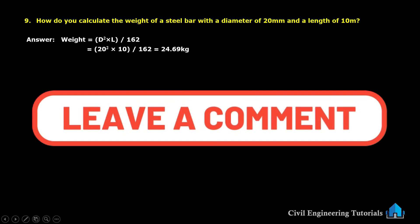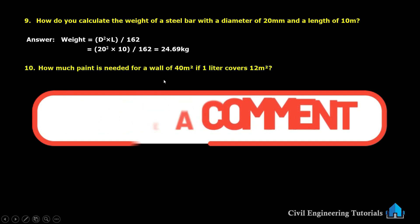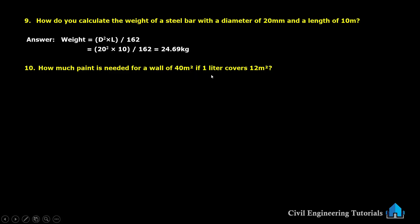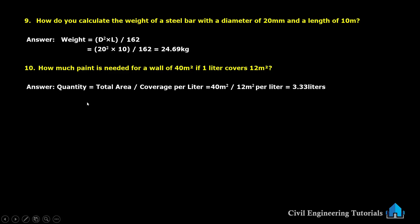Next: how much paint is needed for a wall of 40 square meters if one liter covers 12 square meters? Using the formula total area ÷ coverage per litre: 40 ÷ 12, we get 3.33 liters.